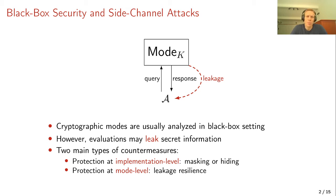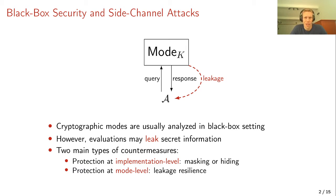The alternative approach is protection at the mode level. In this case the mode is designed in a slightly more involved and expensive way, but such that when implemented it never gives, or barely gives, any useful leakage to the attacker. The difference between these two approaches becomes very clear when looking at permutation-based message authentication codes.